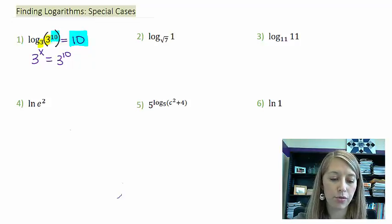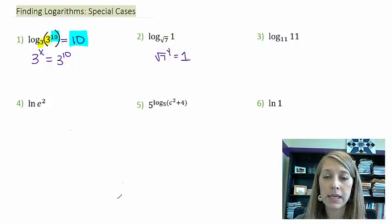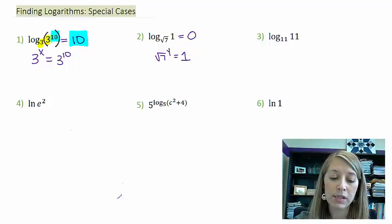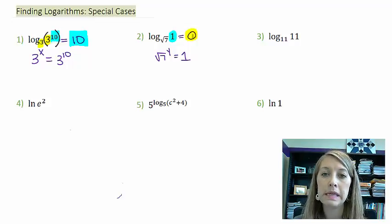In number two, I have square root of seven to what power is equal to one? Well, it might look difficult because I have this crazy number here, the square root of seven. But there's only going to be one answer where it's going to come out to be one, and the answer's got to be zero. The only time we get an answer of one when our base isn't one is when our exponent is zero. So the special case we're hoping you see here is any time we have an argument of one, our answer is guaranteed to be zero.